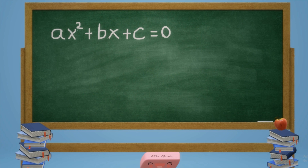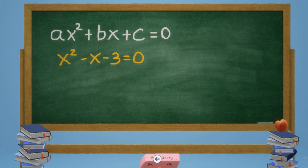How to write a quadratic equation in standard form: first write the quadratic term, then the linear term, followed by the constant term, equals zero. This is the standard form of a quadratic equation. Let's check if this is in standard form — the quadratic term is followed by the linear term, then the constant term, equals zero, so this is in standard form already.